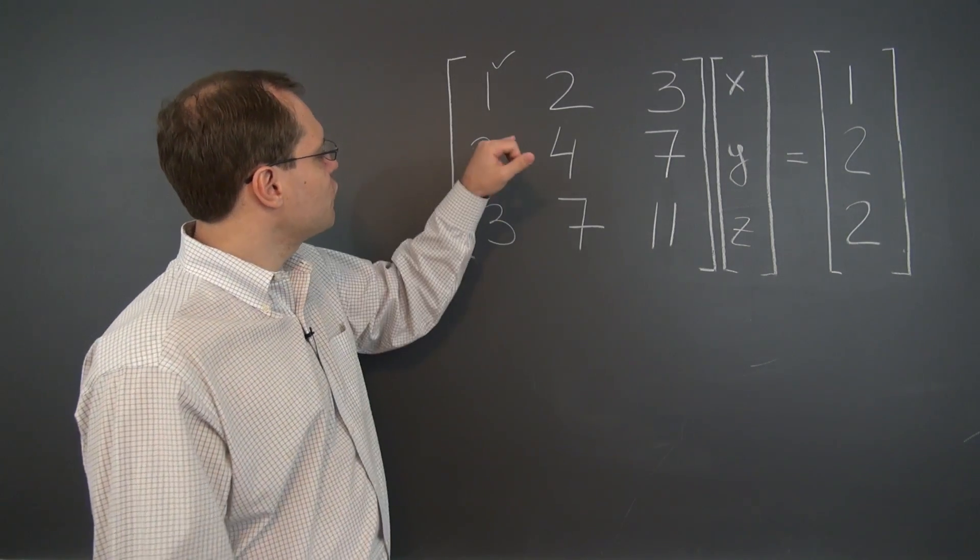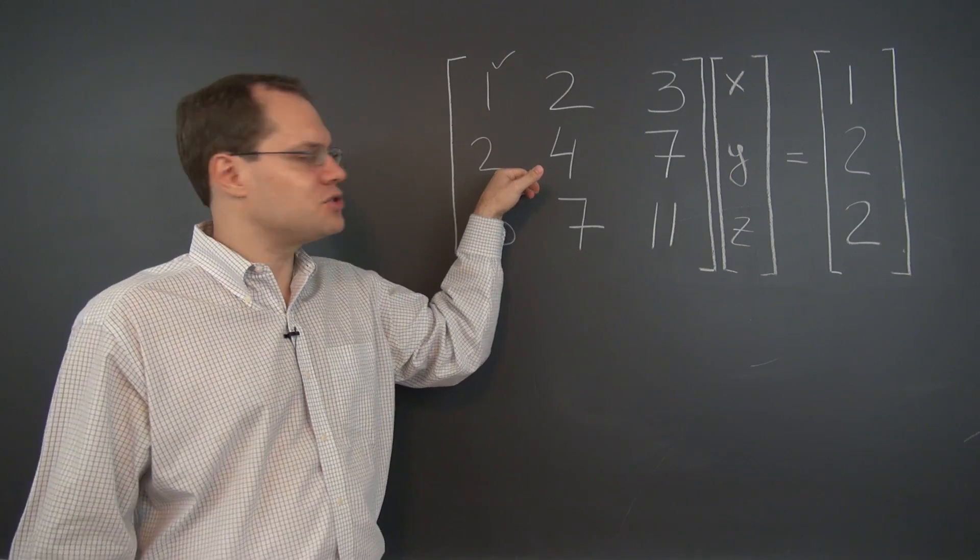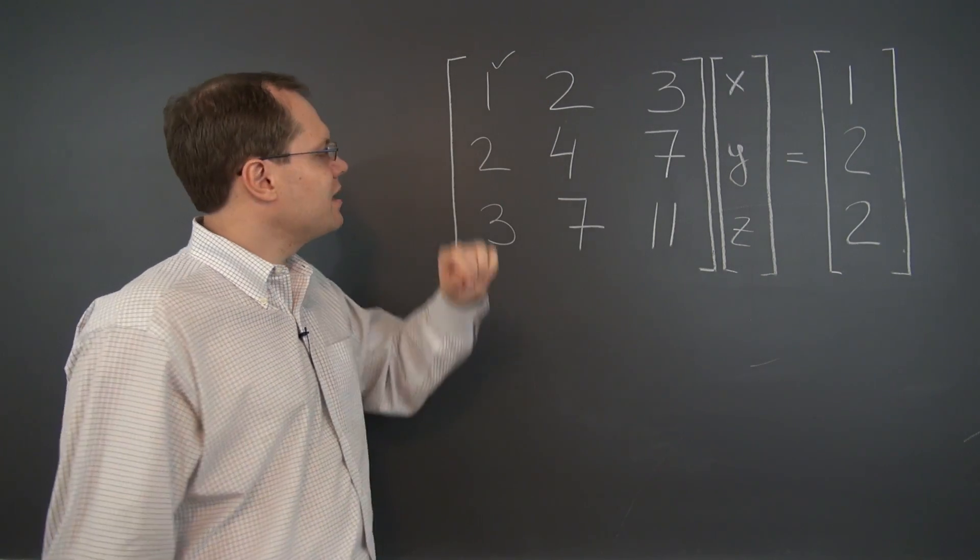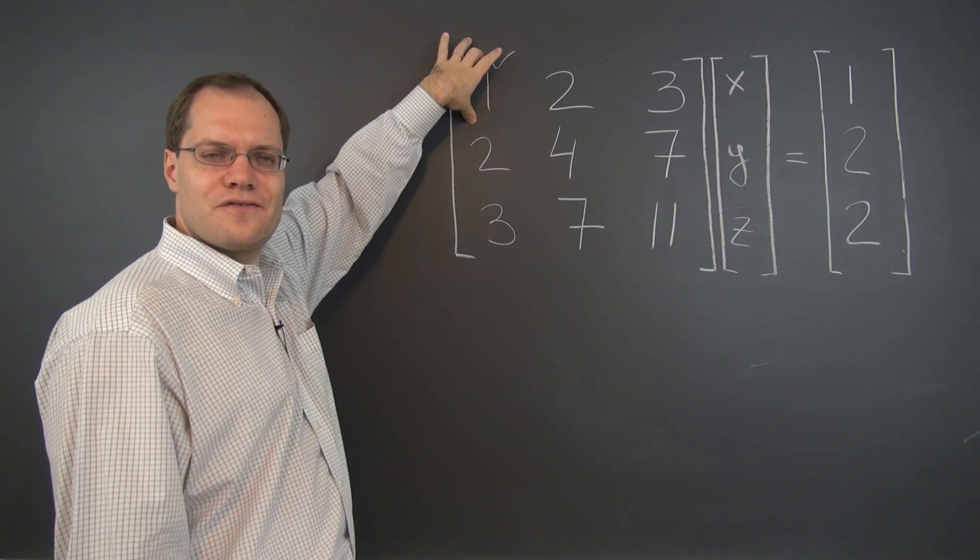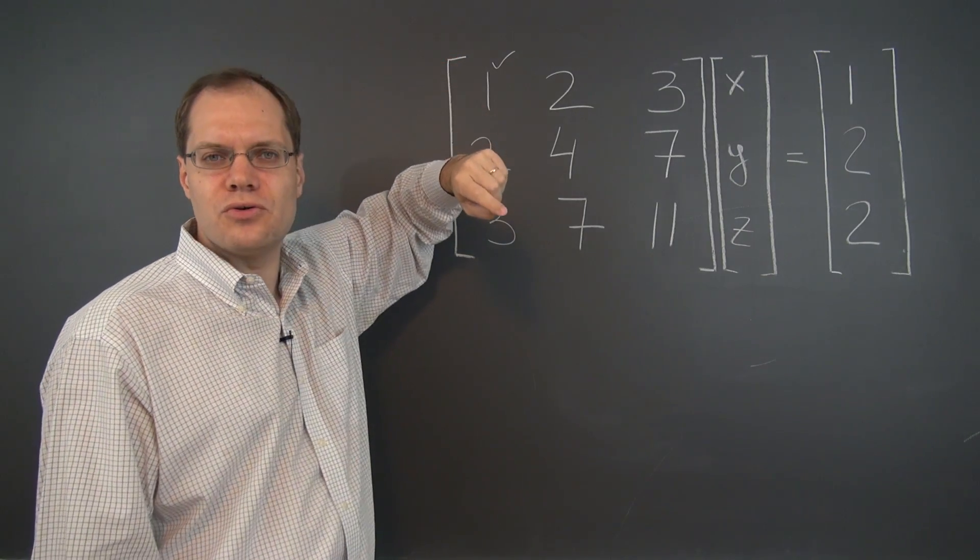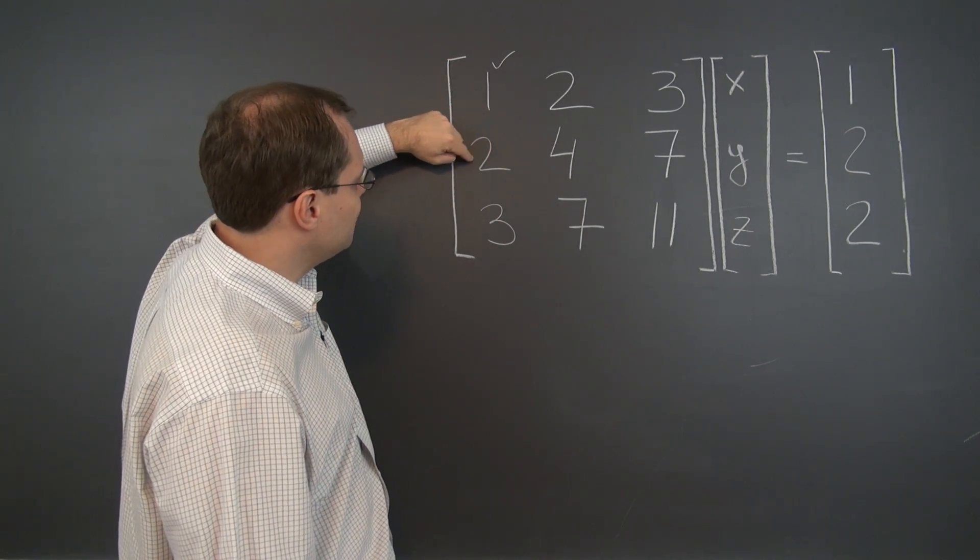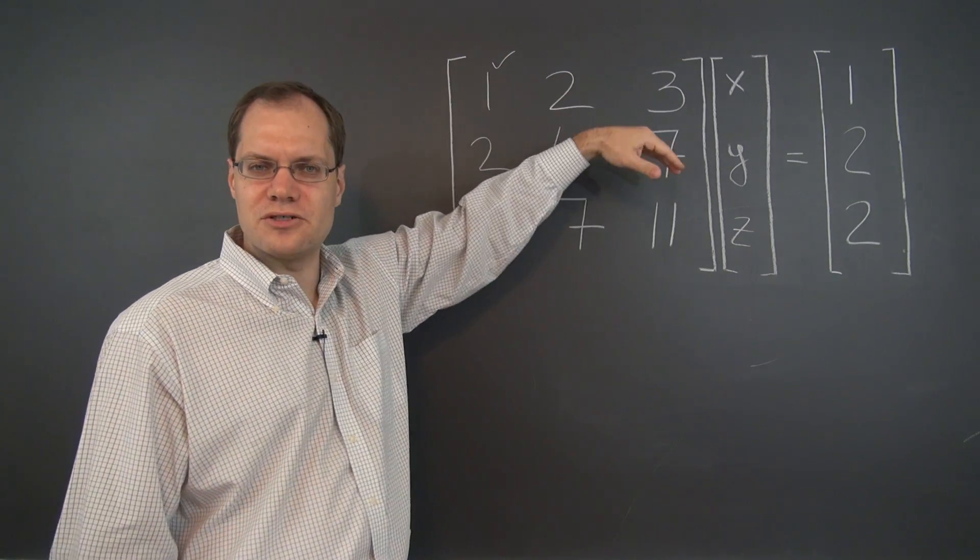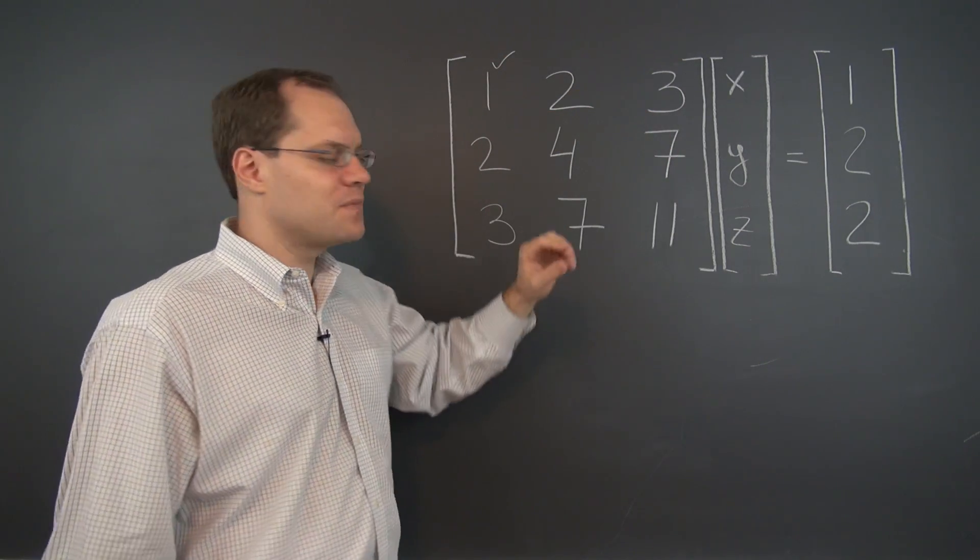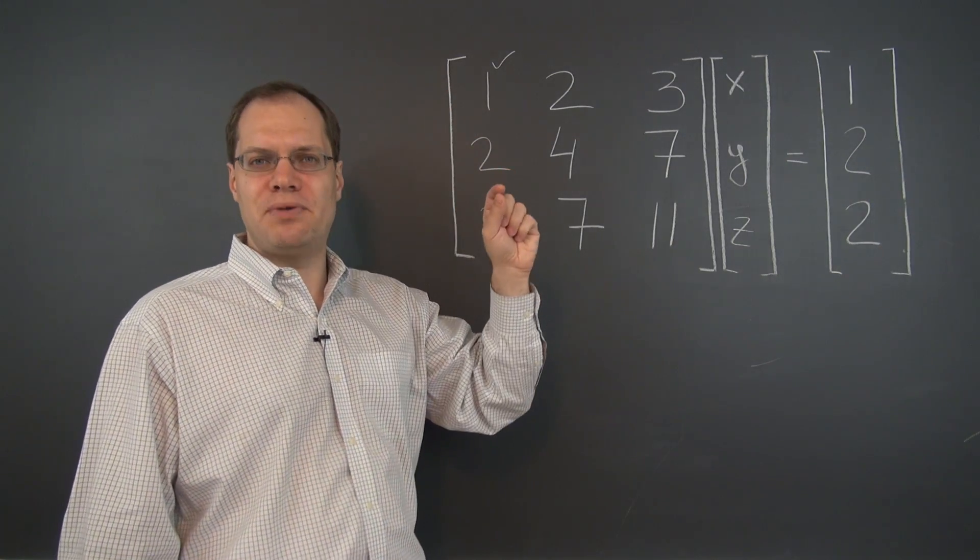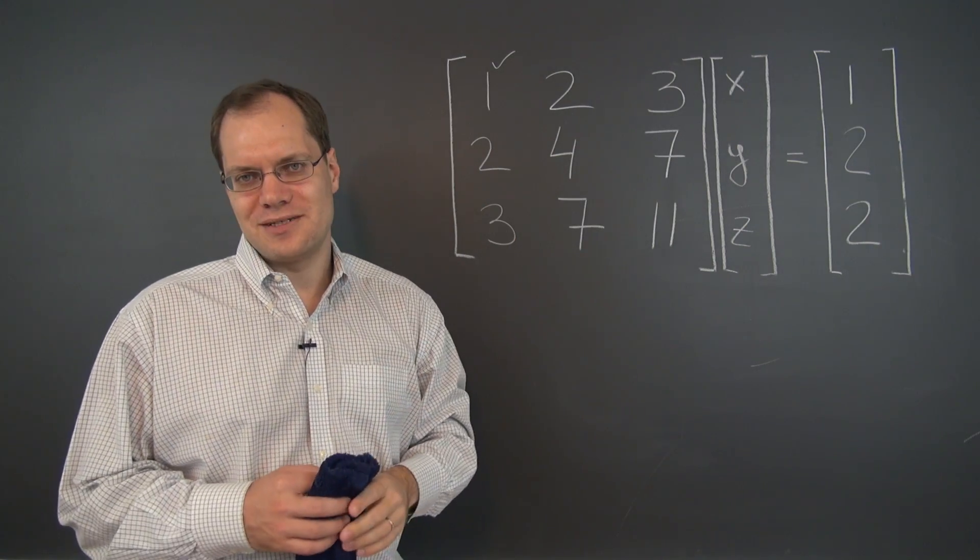So our first order of business is to eliminate this two. Of course we will use one as our pivot and the operation is subtracting two of the first row from the second. That multiple two always equals the ratio of this entry to this entry. So all of the other entries just come along for the ride and it's the relationship between the leading entries, the entry corresponding to the pivot, that determines the multiple.